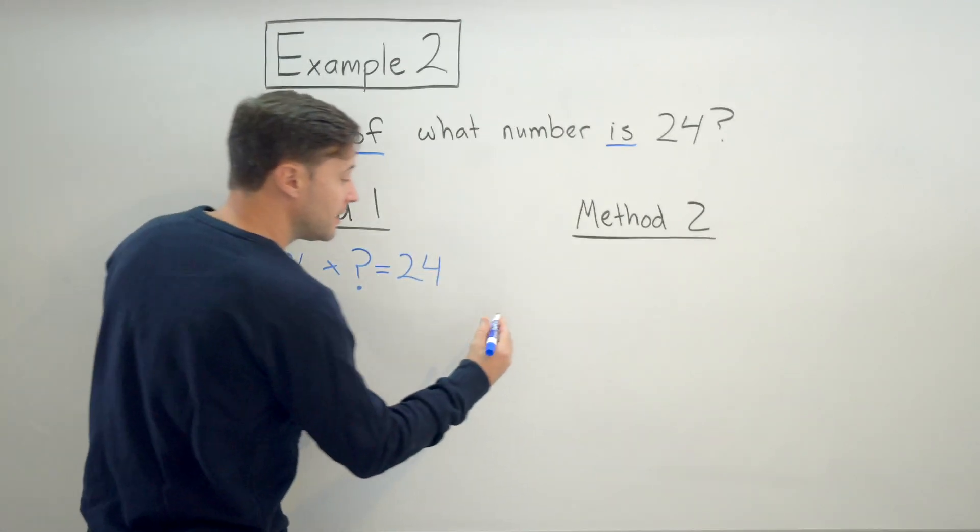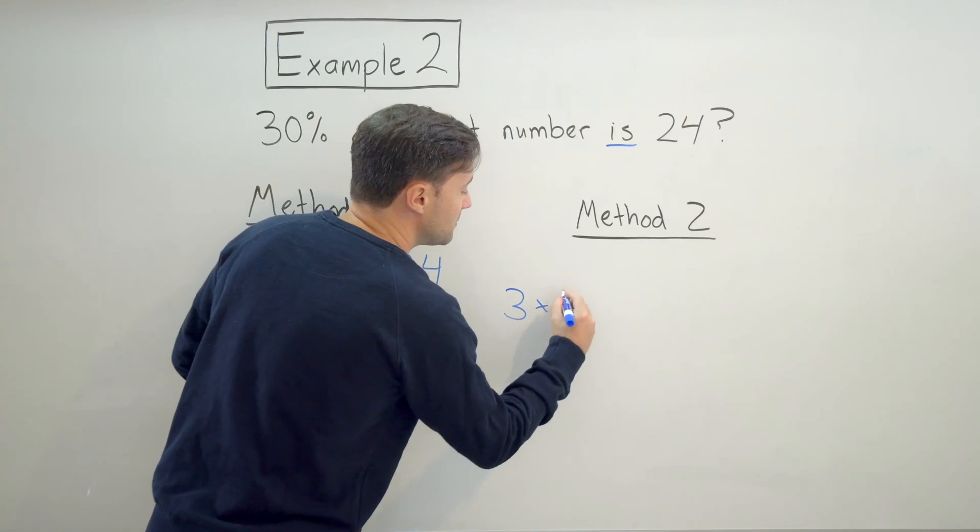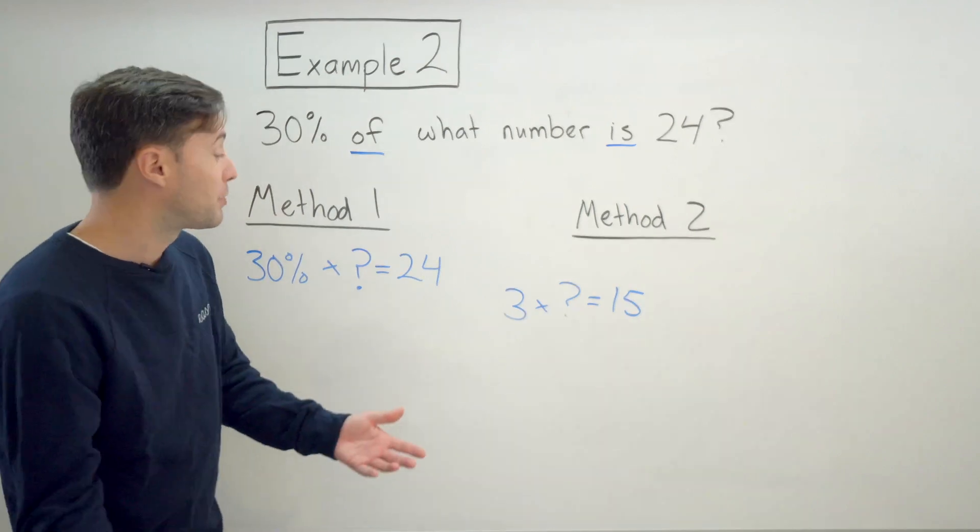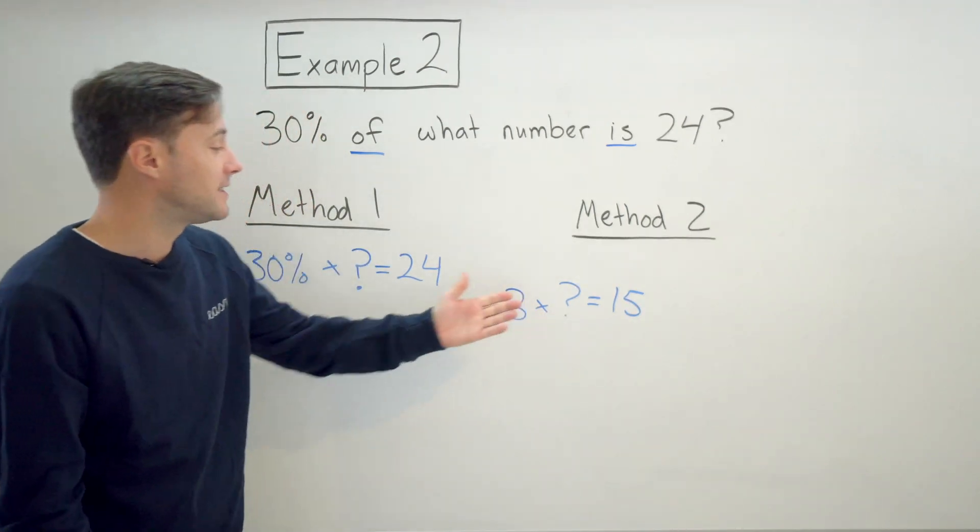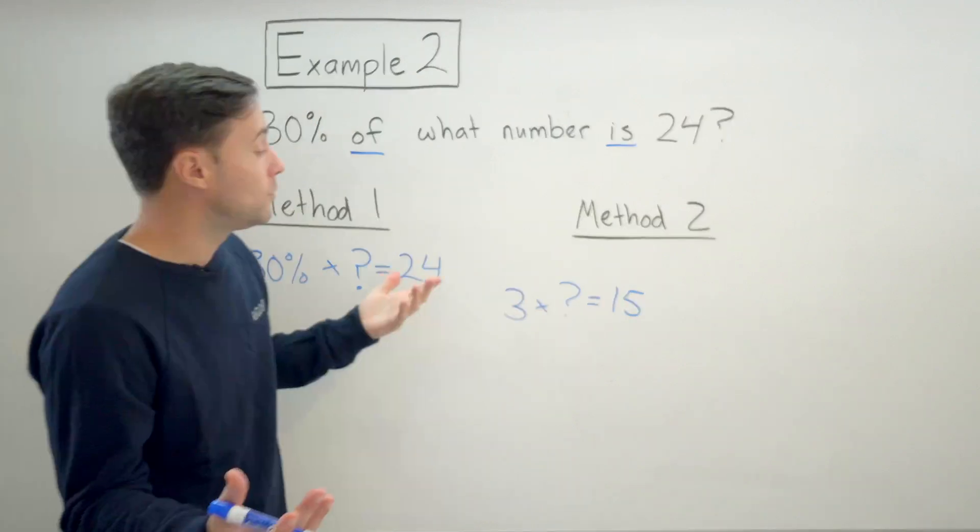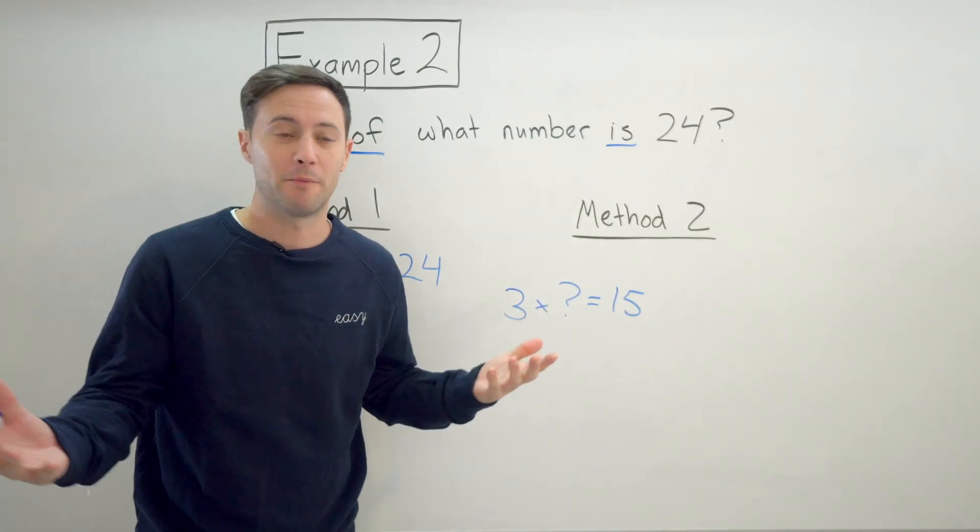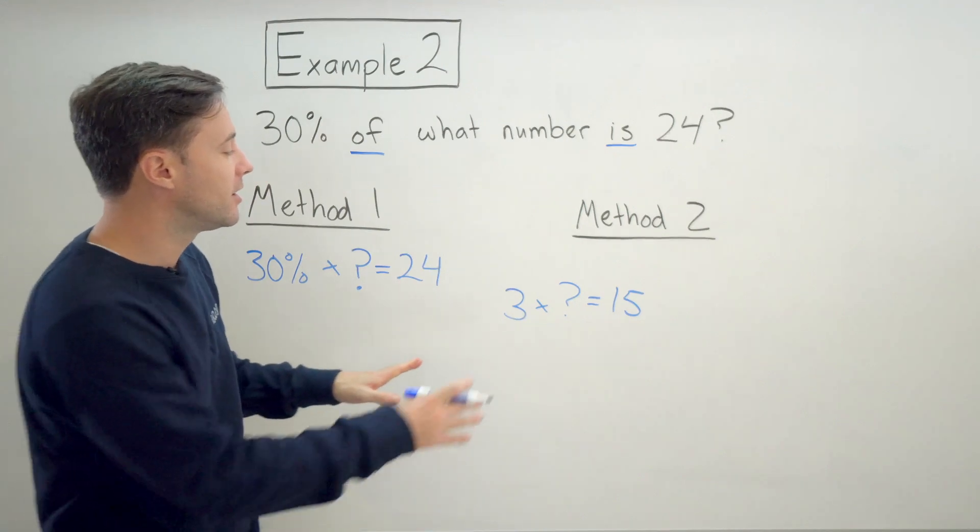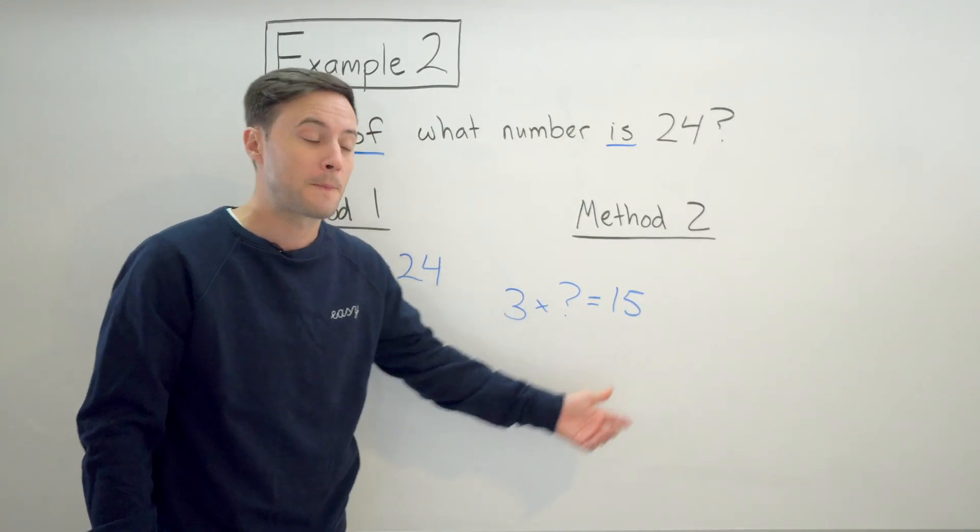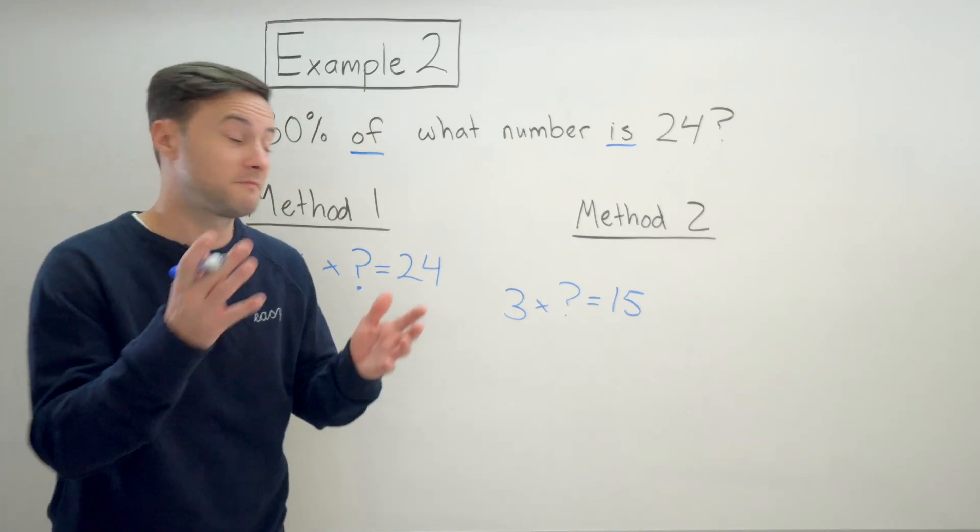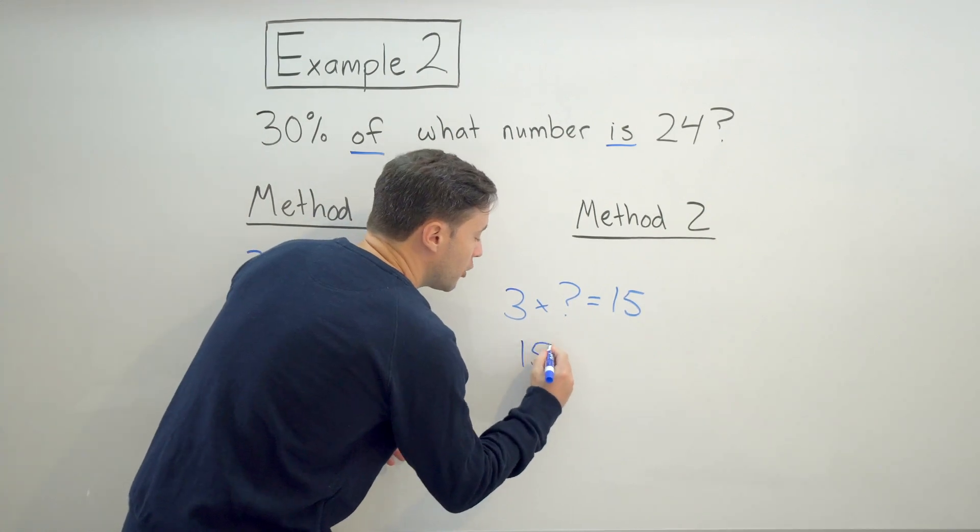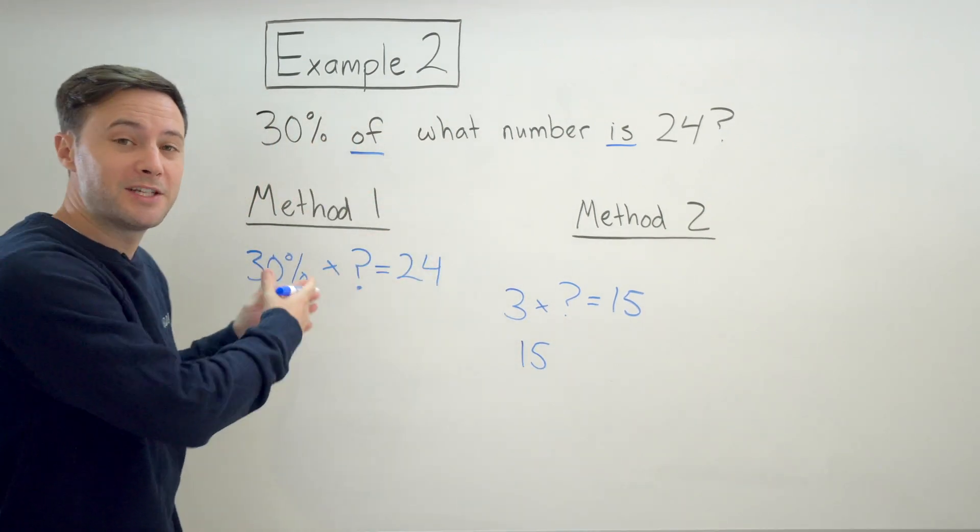So what if I did 3 times what number equals 15? You would probably right away say, well, that's easy. That's 5, right? Just because you know your multiplication tables. What if you didn't know it was 5 just because you have it memorized or I've done it so many times? Is there another way to get 5 from what we're given here? And if you said, well, 15 divided by 3 is 5, you're exactly correct.